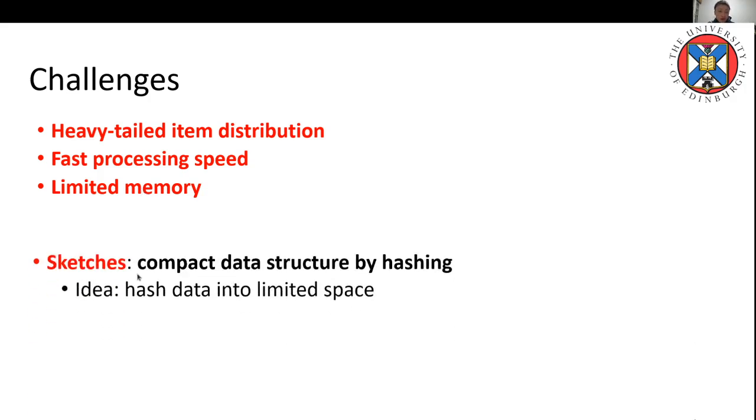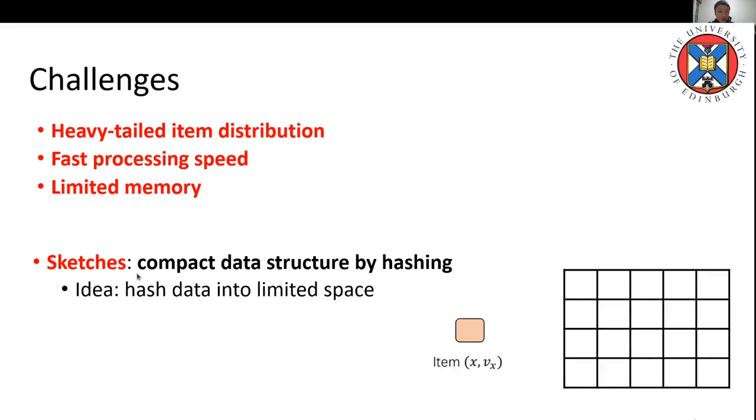So sketches, which is a compact structure, has been proposed. Here's an example of how sketches work. Like one item arrived, we can hash each item key using four different hash functions and locate four different buckets, and we can add the counter in each bucket by the item frequency. So in this way, we can roughly estimate the frequency of all items.